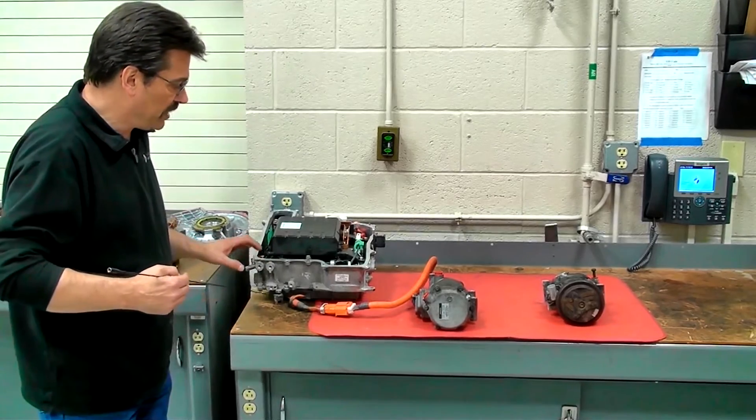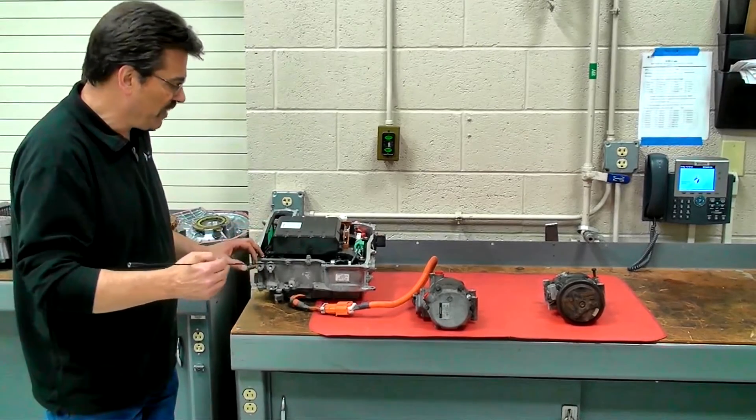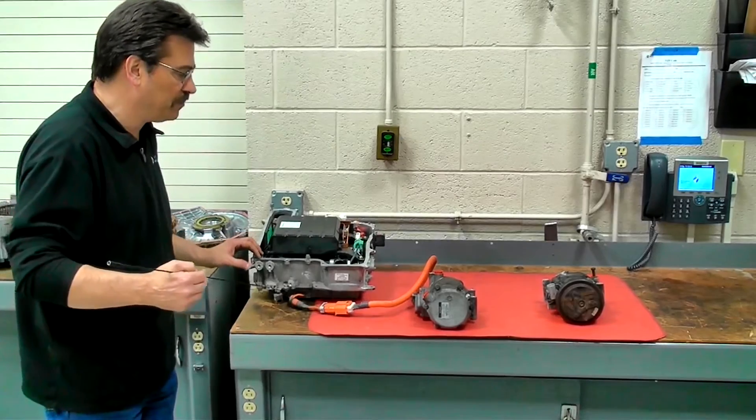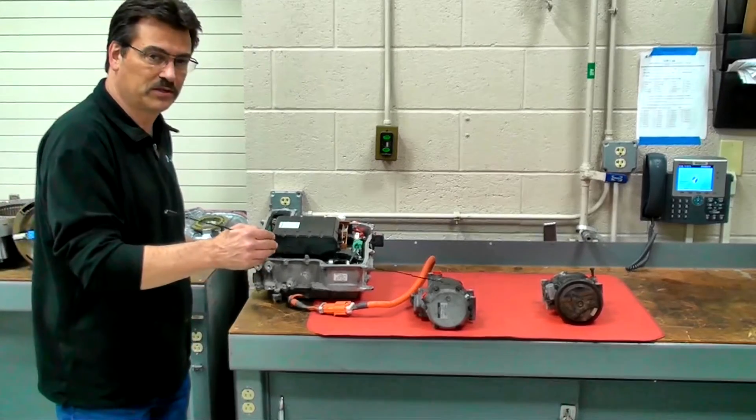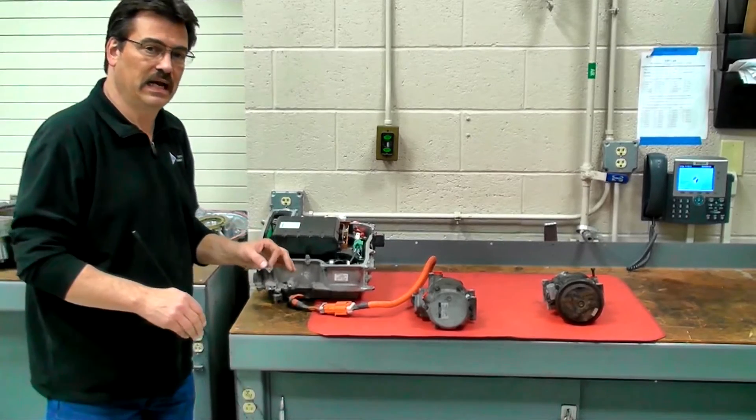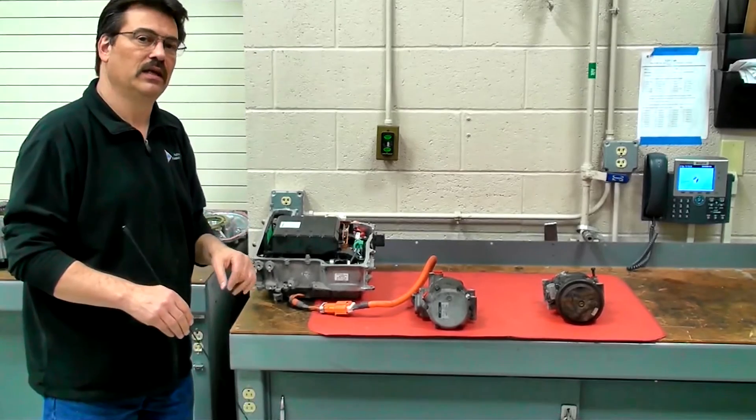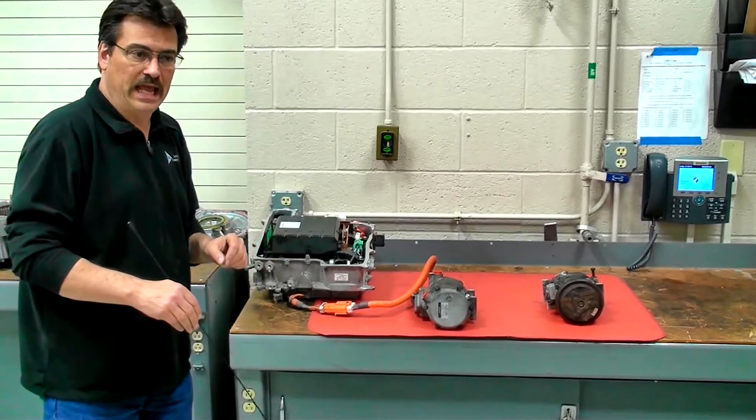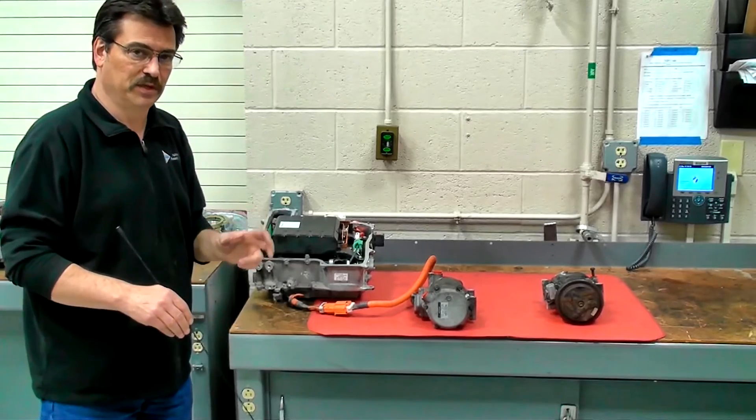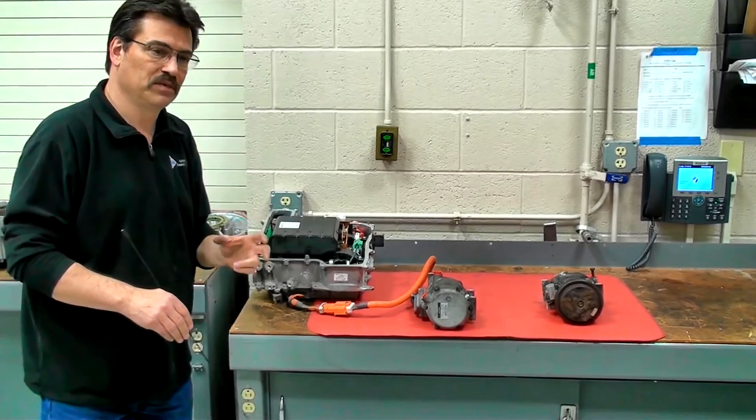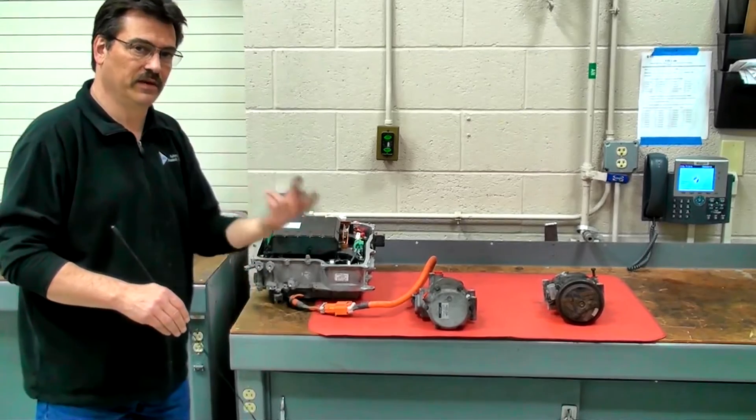So some of them, in the case of Toyota here in the 04, they have a compressor that's built inside the power inverter to send power down to the compressor. In other models you'll find out that there's only two cables going down to the compressor, a positive and negative. And the power inverter is actually built inside the air conditioning compressor. So you can have two different variations of that.